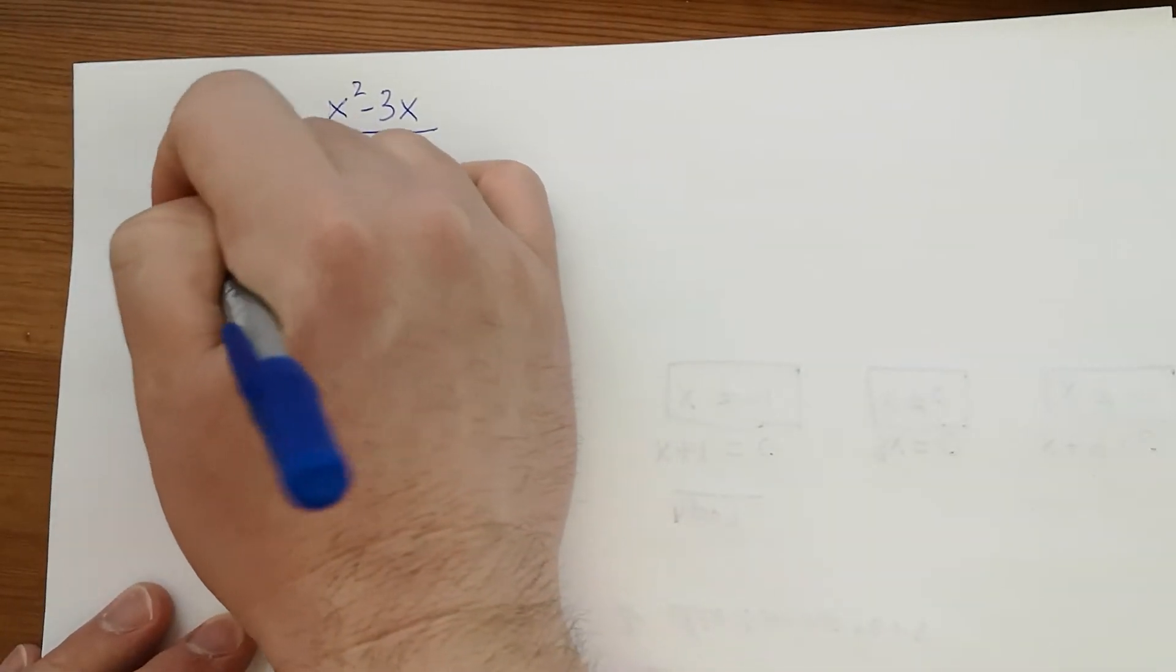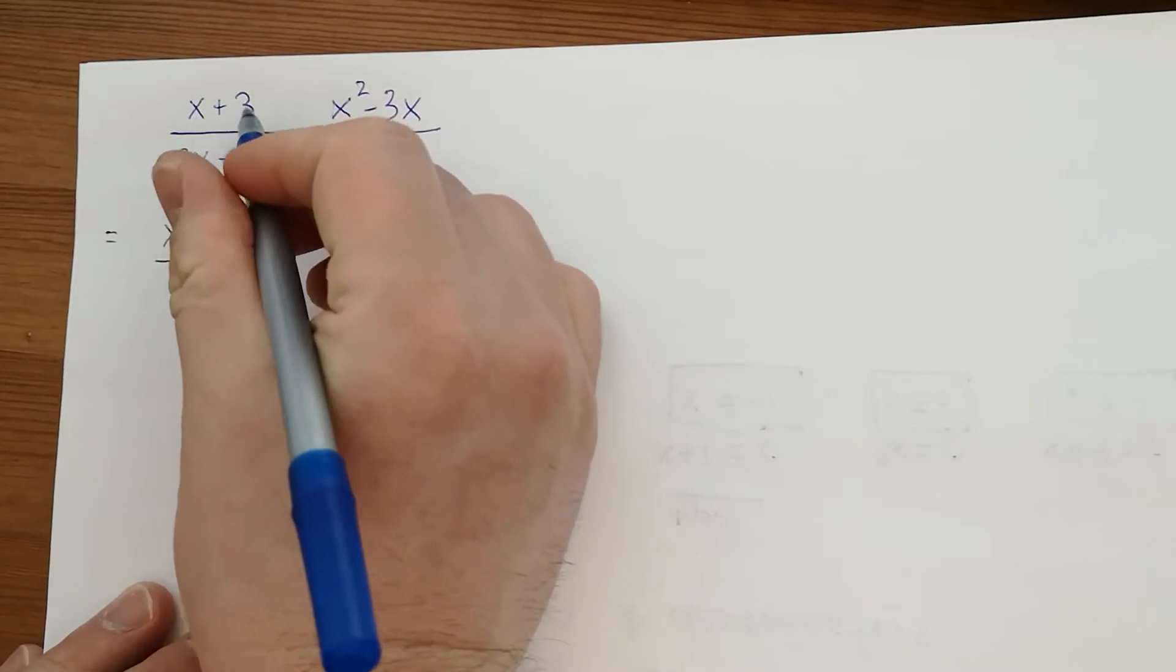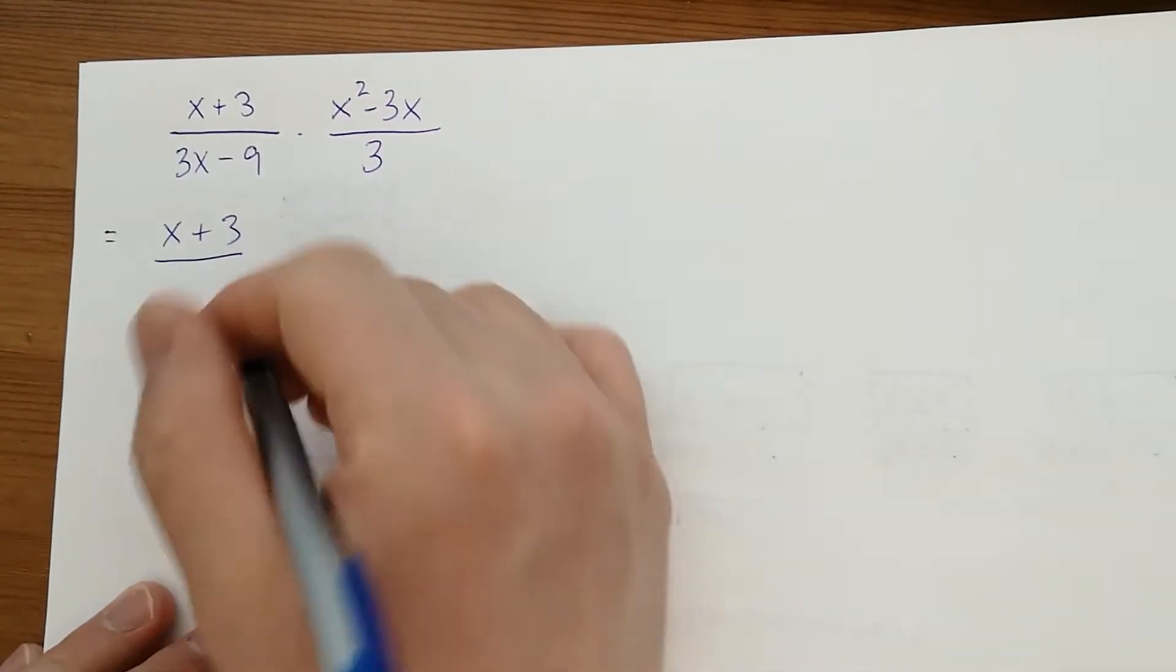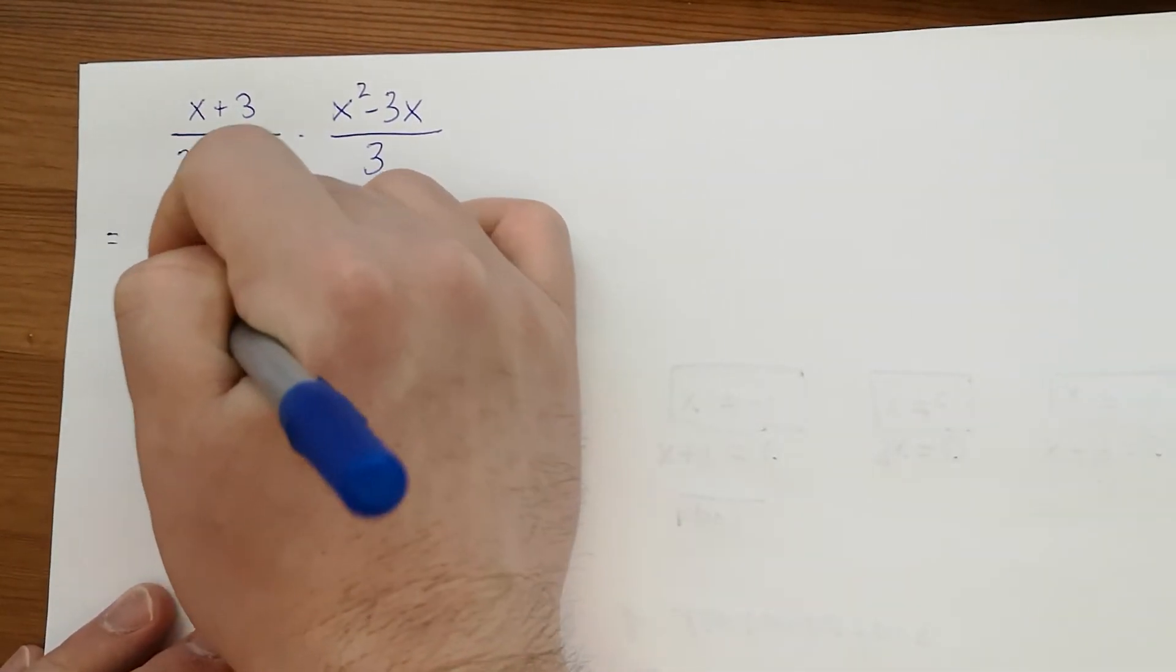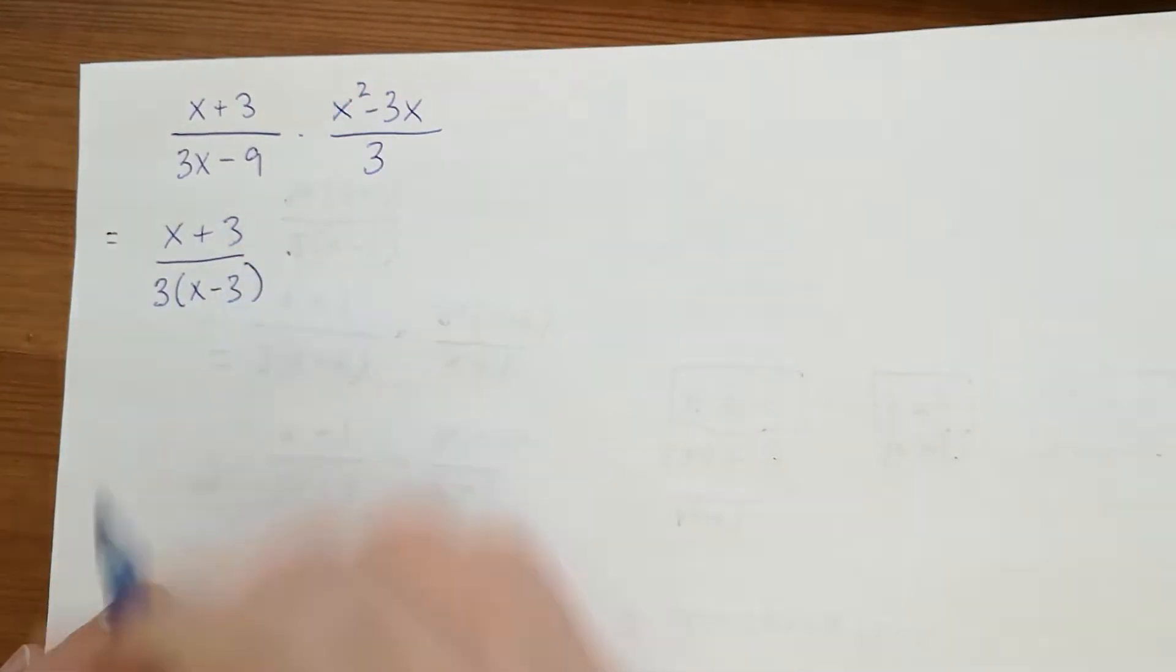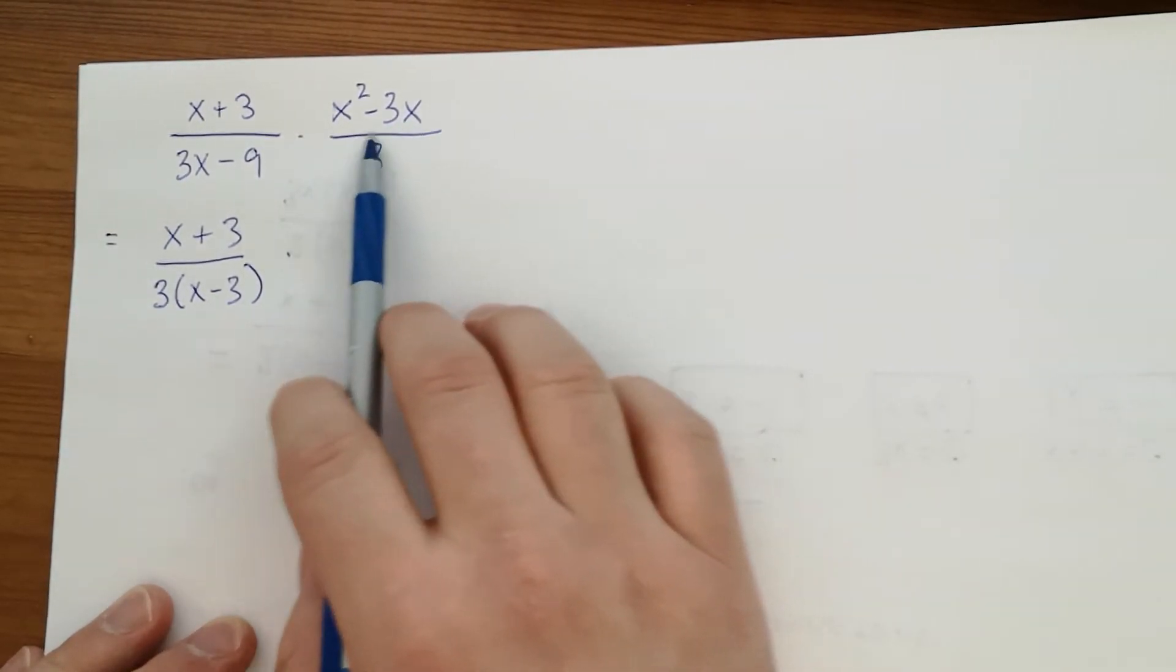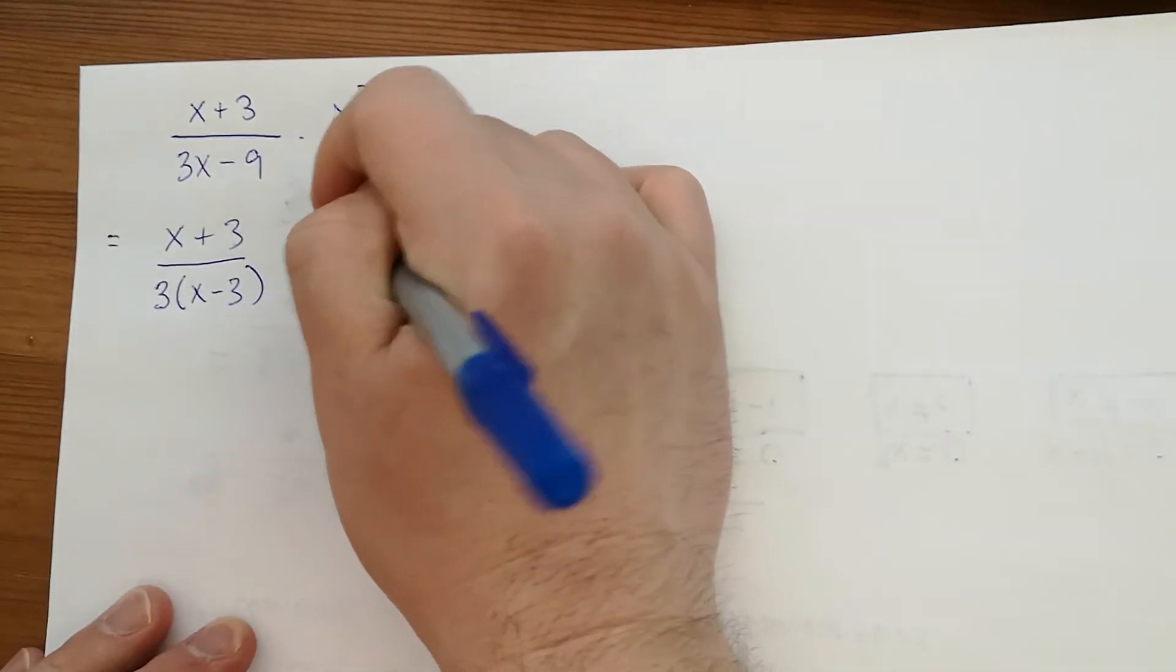The first step is to factor the numerators and denominators. x+3 can't be factored. For 3x-9, however, I can factor out 3. On this side, x²-3x, I can factor an x out of both terms.